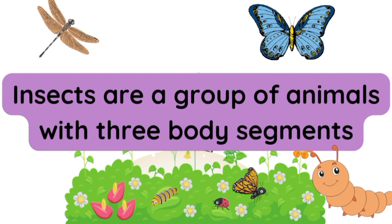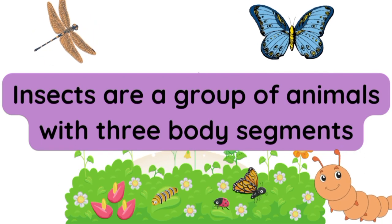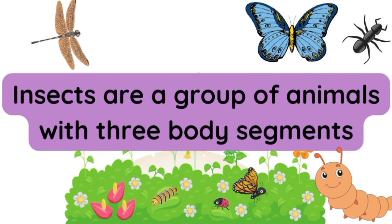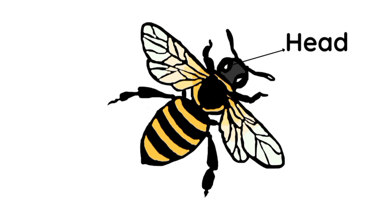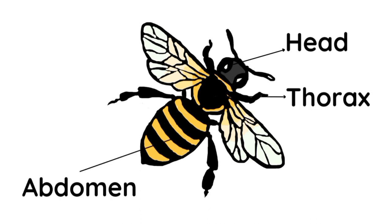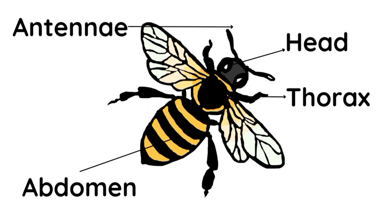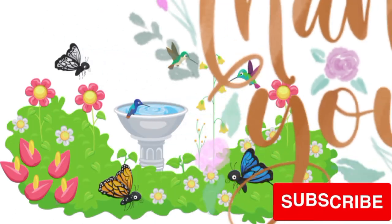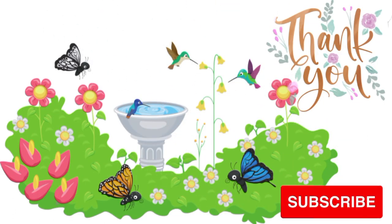What are these insects? Insects are a group of animals with three body parts: Head, Thorax, and Abdomen. And it has a pair of antennae with six legs. Thank you for watching. Please like and subscribe.